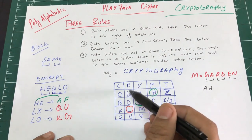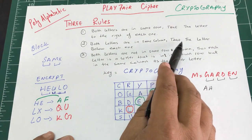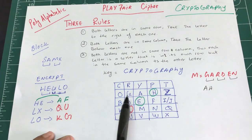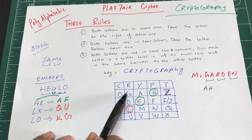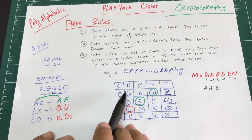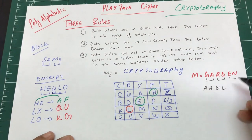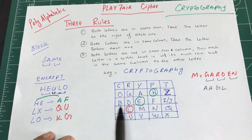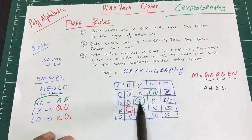For pair RD: R and D are in the same column, so we take the letter below each. R becomes G and D becomes L. So RD → GL.